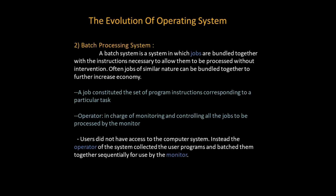Due to the limitations of the serial processing system, the batch processing system was developed. A batch processing system involves jobs — jobs are bundled together with the instructions necessary to allow them to be processed without intervention. Jobs of similar nature can be bundled together to further increase economy. A job constitutes a set of program instructions corresponding to a particular task. In the batch processing system, there was an operator in charge of monitoring and controlling all the jobs to be processed by the monitor.